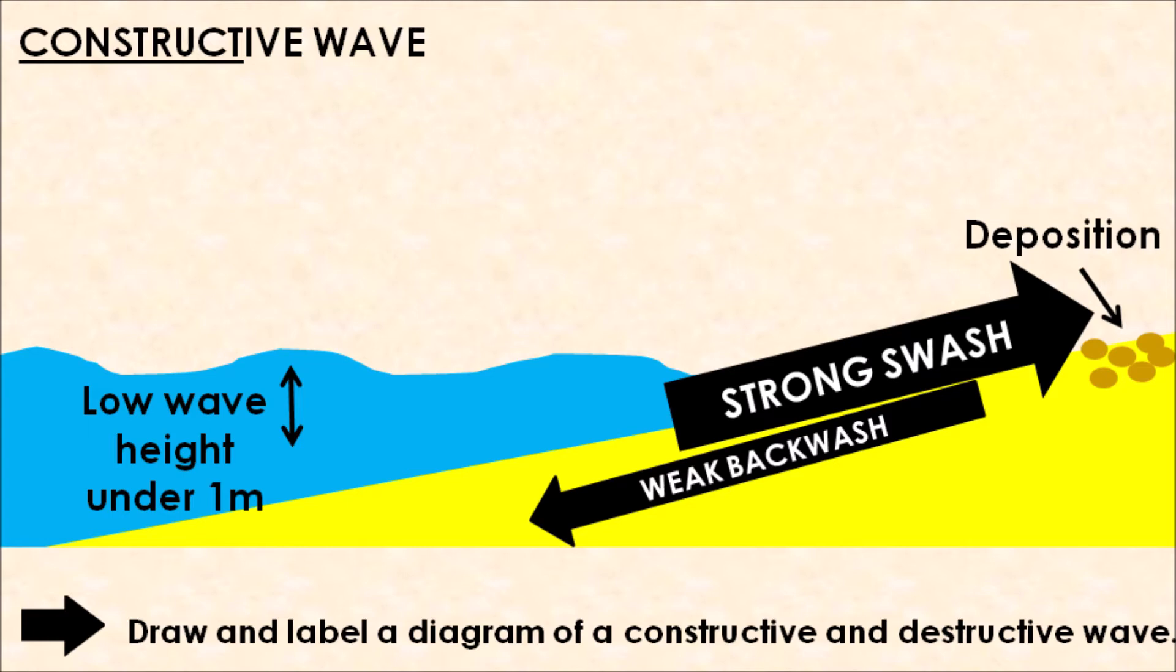But constructive waves have a very weak backwash. They use all their energy in the swash, so when it comes to retreating back into the sea through backwash, they have no energy left. This causes deposition to take place. That sediment, sand, and silt gets dropped off on your coastline, and that constructs and builds up your beaches.